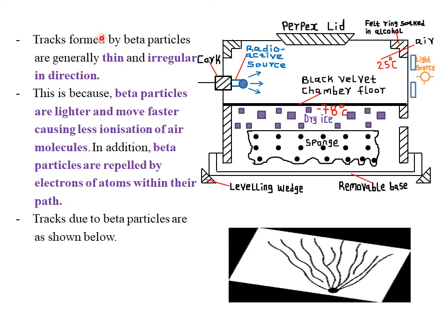Tracks formed by beta particles are generally thin and irregular in direction as compared to those of alpha particles. For alpha particles, the tracks were thick and regular — moving in a straight line. Comparing to the tracks of beta particles, they are thinner and irregular or zigzag because they are not moving in a straight line or in a specified direction.